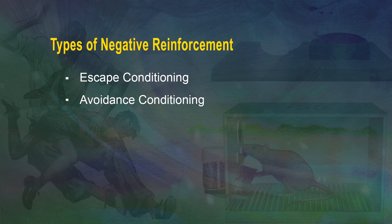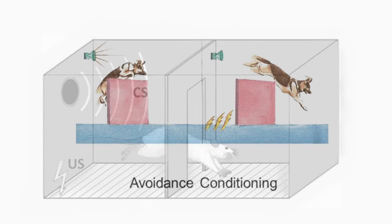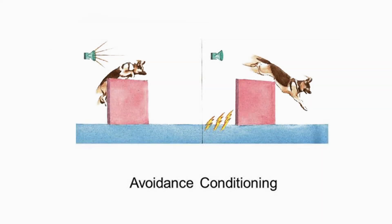Two: avoidance conditioning. In the other form of negative reinforcement called avoidance conditioning, the behavior has the consequence of causing something negative not to happen when it otherwise would have happened.